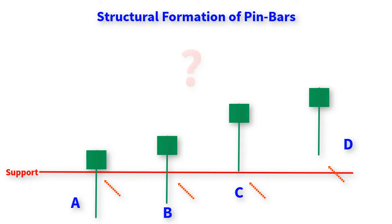If you say pin bar A, you are right. And if you say pin bar B, you are also right. But take note that pin bar C and D are the least powerful.